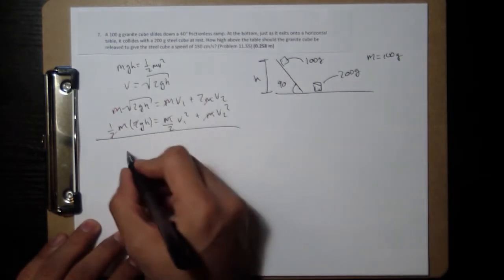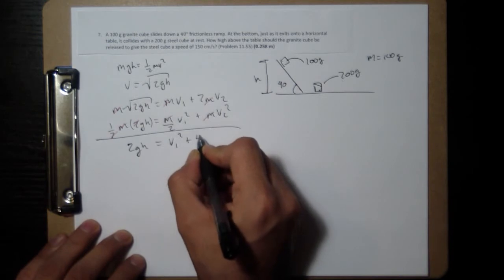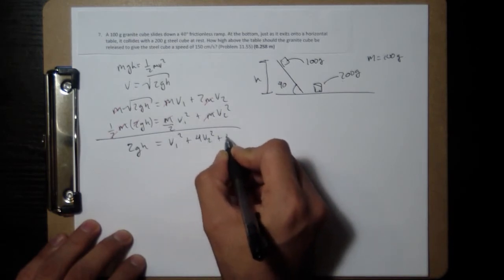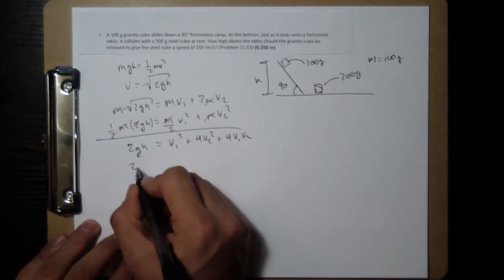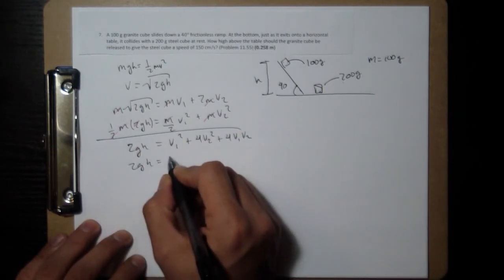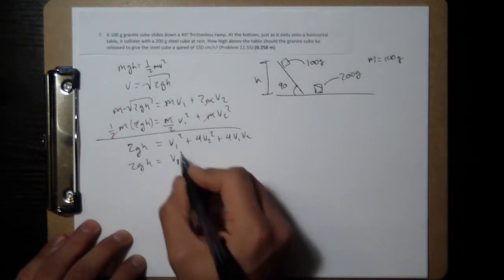And once again, same strategy. We're going to square the top. 2gh equals v1 squared plus 4v2 squared plus 4v1 v2.